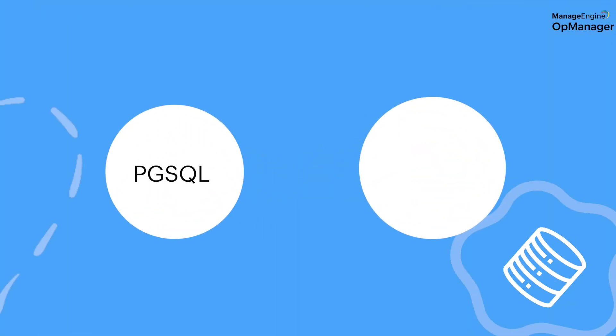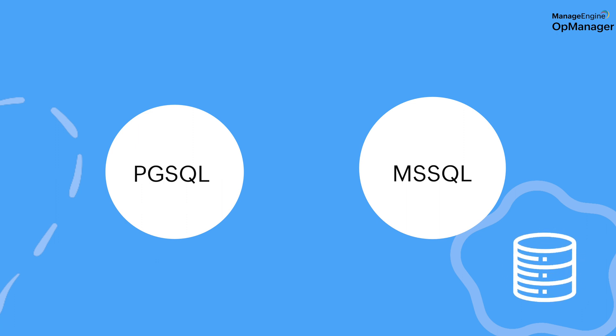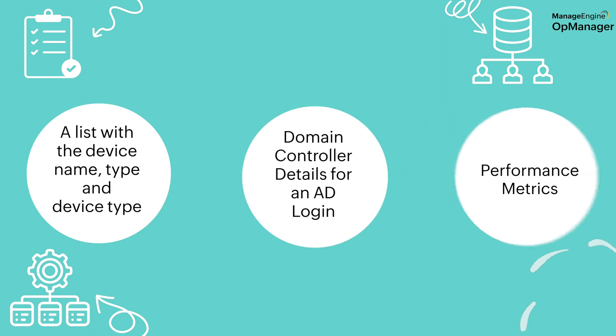Once you're done with this, it's time to begin the installation. First, choose between a PostgreSQL or an MSSQL database, then share the domain controller details in case of an Active Directory login. Provide an inventory list with the devices and interfaces you want to be monitored on OpManager.